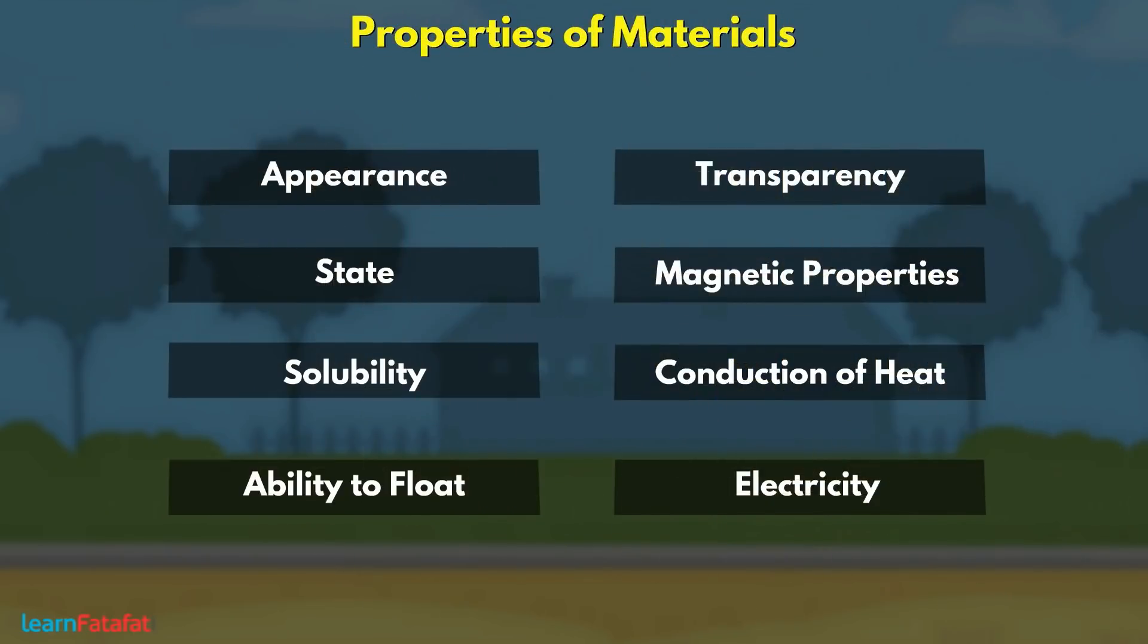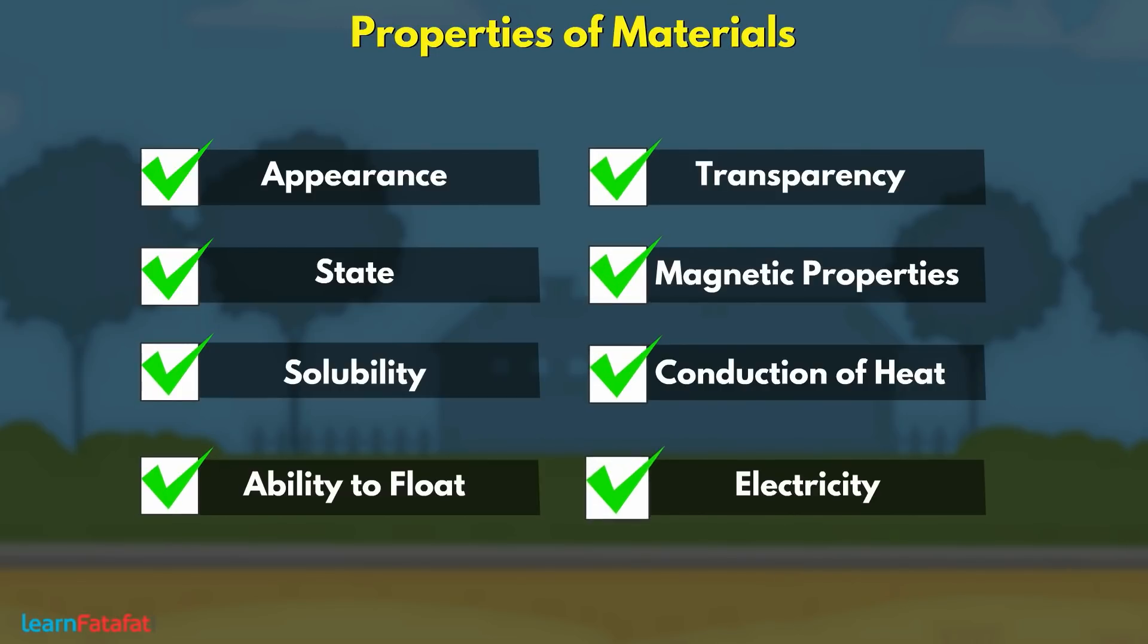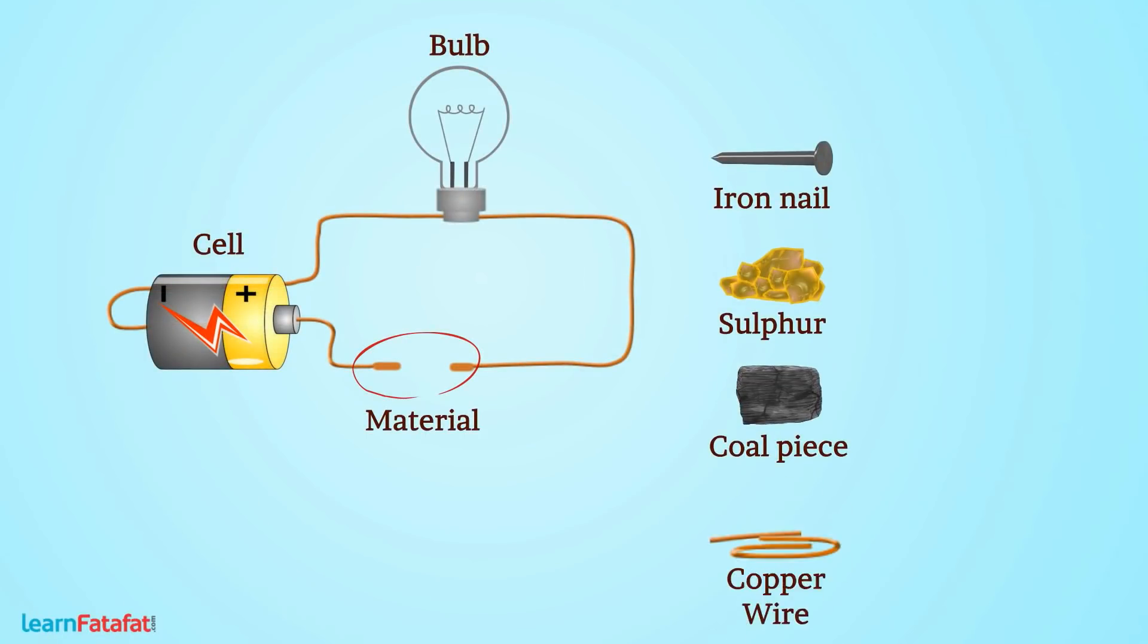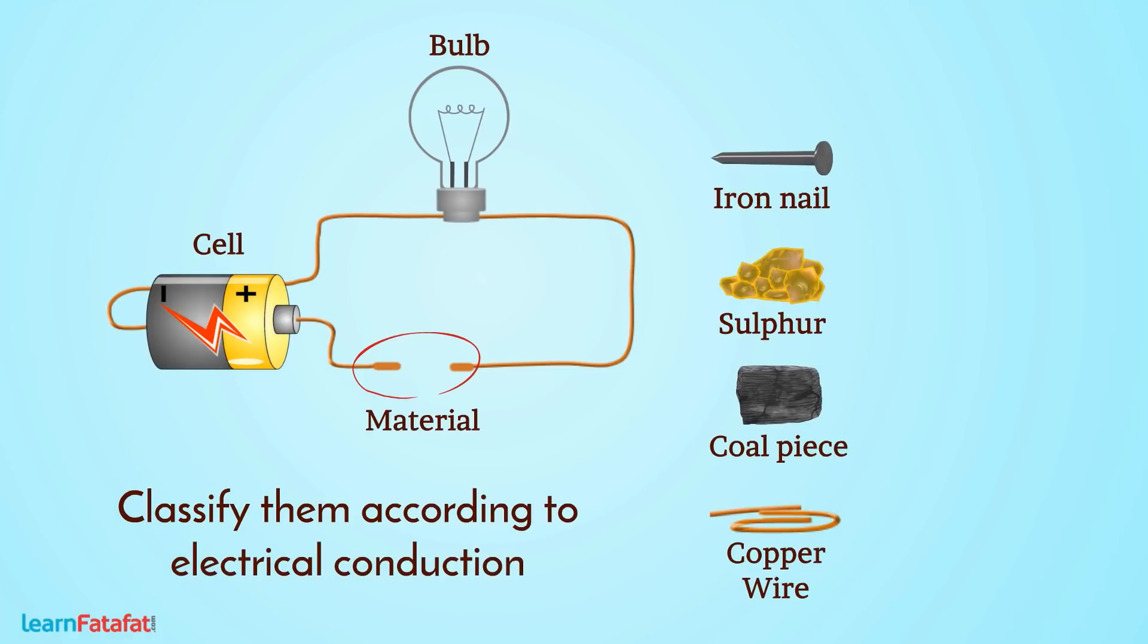We can use any property to classify the material. For example, here are some materials and we need to classify them according to electrical conduction. Can we do that? Yes. The answer is like this.